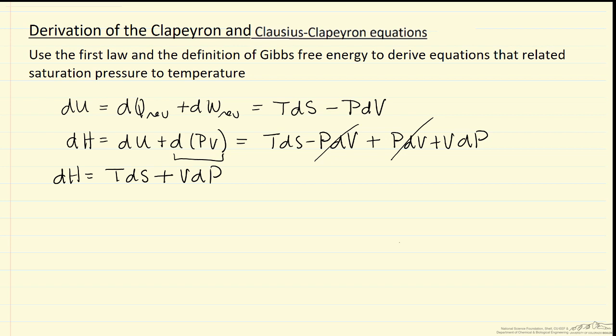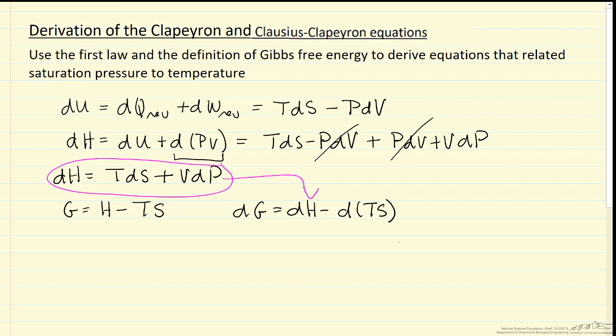I'll now write the definition for Gibbs free energy and also write the differential form of the equation. So now what we're going to do is substitute this into here. And then for this last term I'm going to expand it out into two terms. And again we're going to notice that this term cancels with this term, so I'll rewrite the equation.